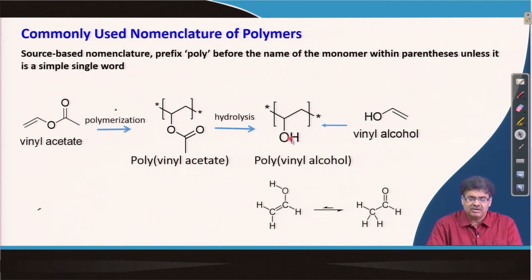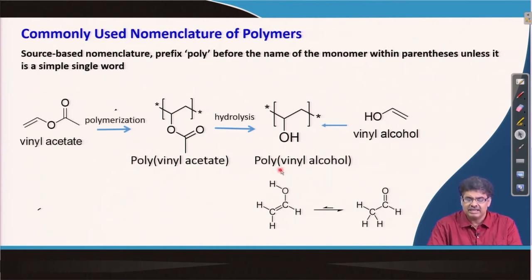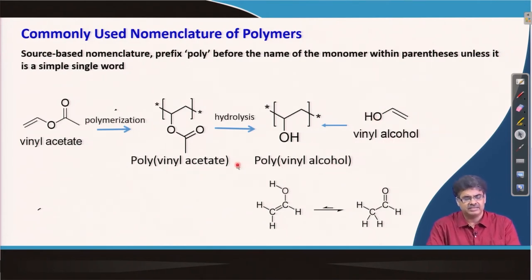That is why polyvinyl alcohol is not always 100% OH groups — some percentage of acetate groups still exist. When you buy polyvinyl alcohol, you will see the percentage of hydrolysis listed, like 98% or 95%, meaning that fraction of vinyl acetate groups has been hydrolyzed to alcohol. So the name may suggest a monomer, but the polymer may actually be synthesized by an indirect method.